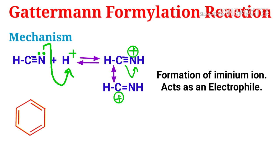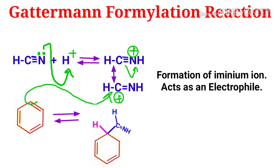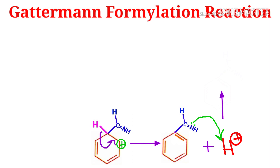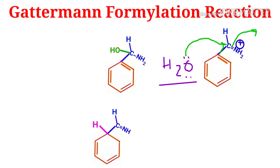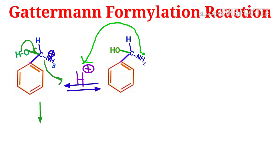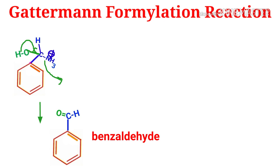With the formation of the iminium ion, benzene attacks this carbon center to give this type of structure, and when the hydrogen falls back, we get this intermediate. Here the lone pair on the nitrogen atom takes the proton to give a protonated product. After the addition of a water molecule, we get this structure, and again the nitrogen atom gets protonated. When the hydrogen falls back and the ammonium ion is removed, we finally get the aromatic aldehyde product — here it is benzaldehyde.